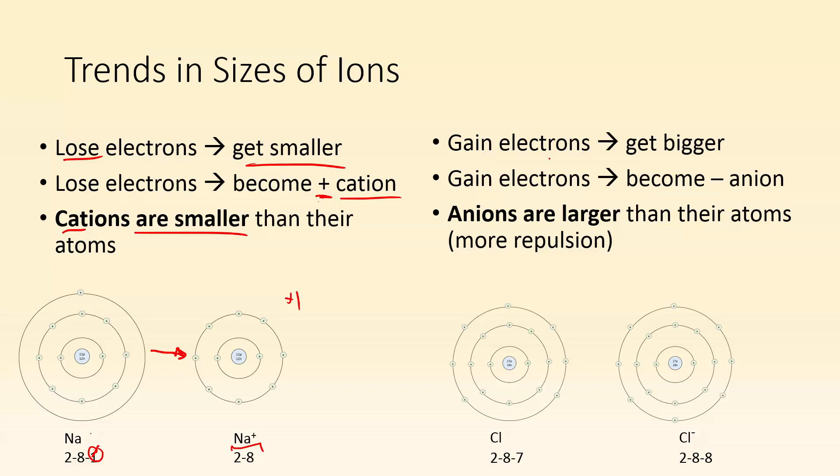Now the opposite. We can gain electrons, and it gets bigger. When we gain electrons, we become a negatively charged anion. So you can say anions are larger than their atoms. There's more electrons, and there's also more repulsion. So those electrons are pushing away from each other more. Chlorine has an electron configuration 2-8-7. You add one electron to it to make it a negatively charged anion, and now you've got 2-8-8. Hopefully you can understand why this one is bigger than the chlorine atom.